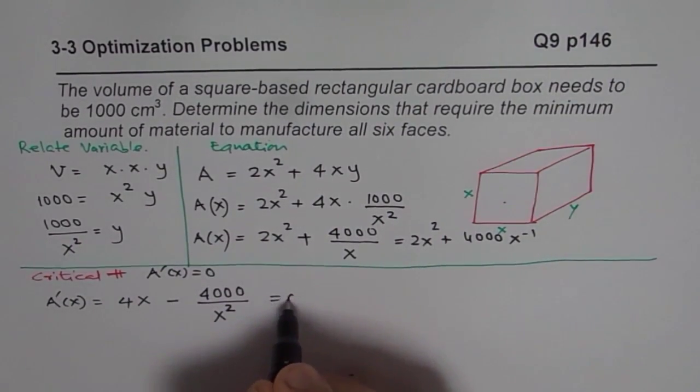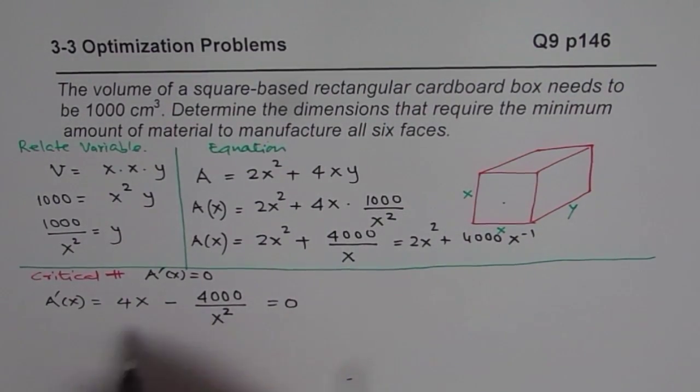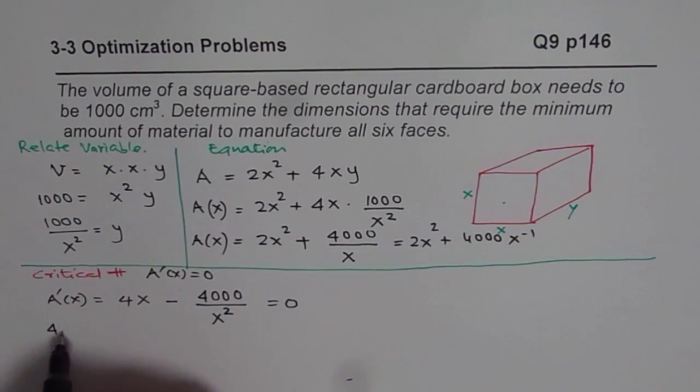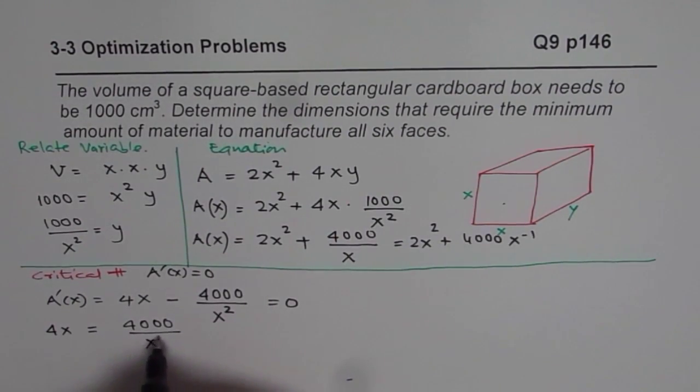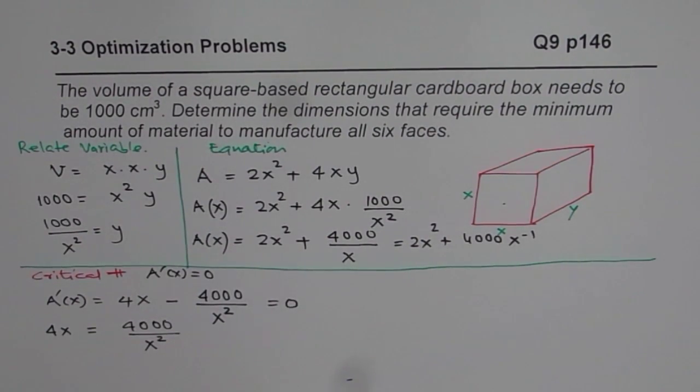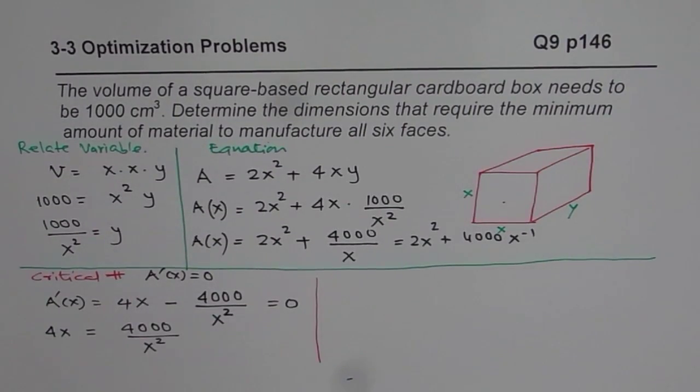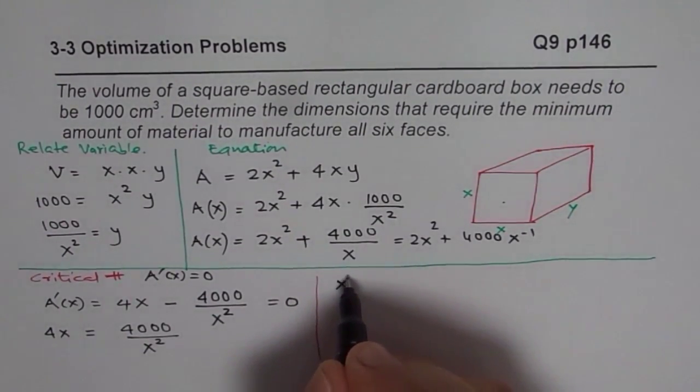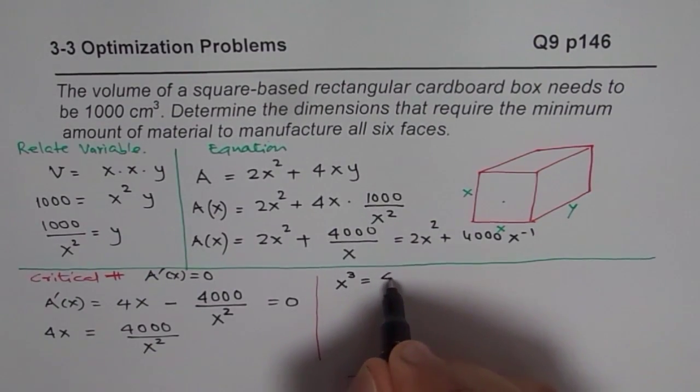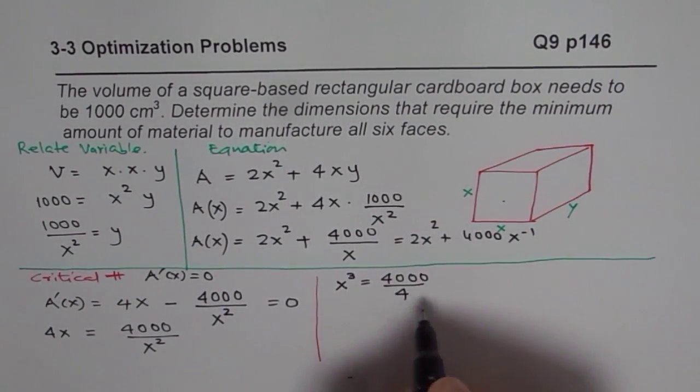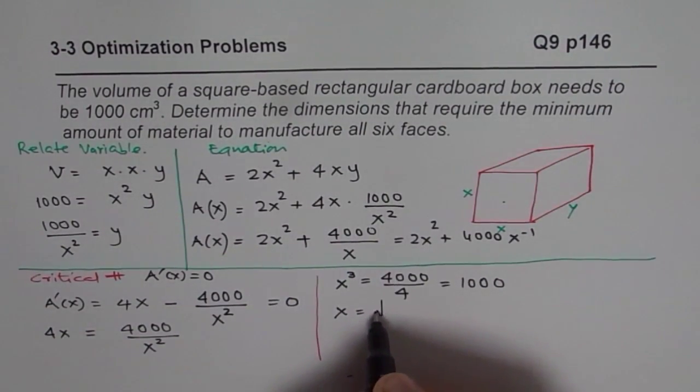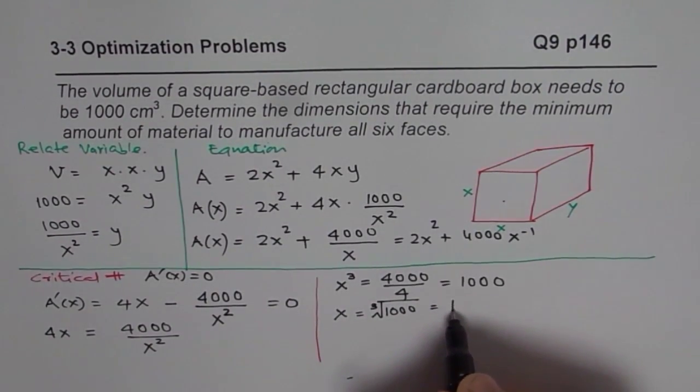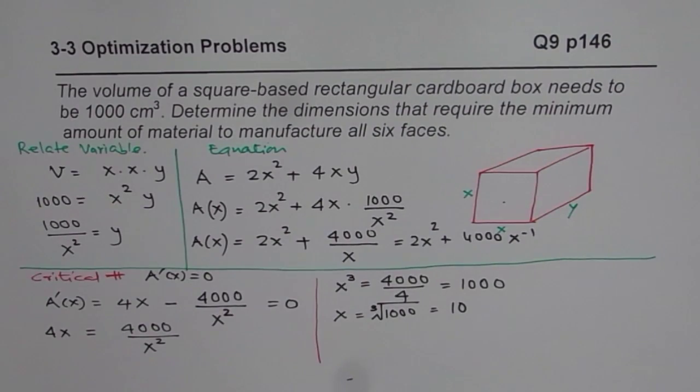Now, for this to be equal to 0, we have 4x should be equals to 4000 divided by x². And that can be solved. So we get cross-multiply, so we get x³ is equal to 4000 divided by 4, which is indeed 1000. And so we get x as cube root of 1000, and that is 10. So x is 10 for us.